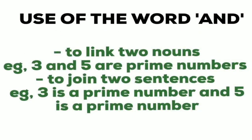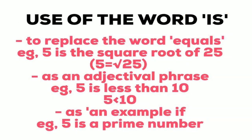Regarding the use of the word 'and': it is used to link two nouns, for example 'three and five are prime numbers,' and also to join two sentences, for example 'two is an even number and one is an odd number.' The word 'is' is used to replace the word 'equals' - for example, '5 is the square root of 25.' It is also used as an adjective phrase, like '5 is less than 10,' and as an example, like '5 is a prime number.'